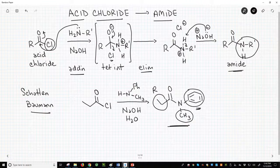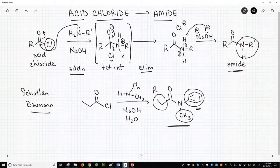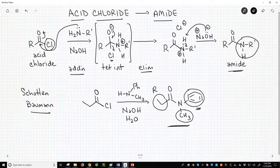So that's how we make amides. We react an acid chloride with an amine in the presence of base. Thank you.